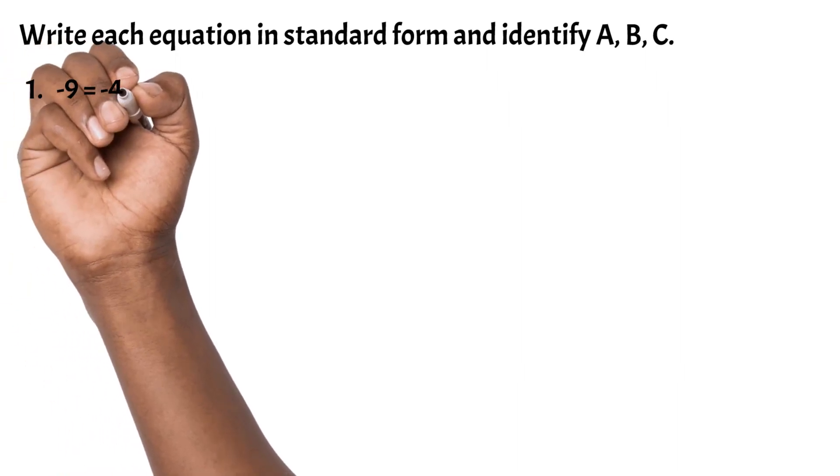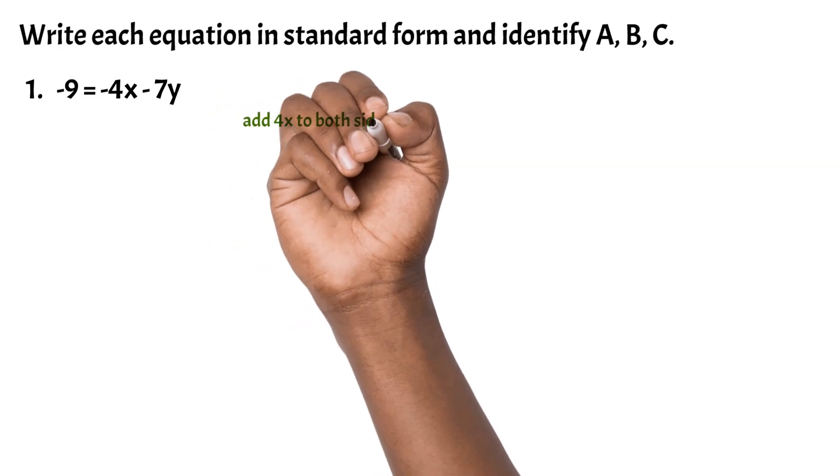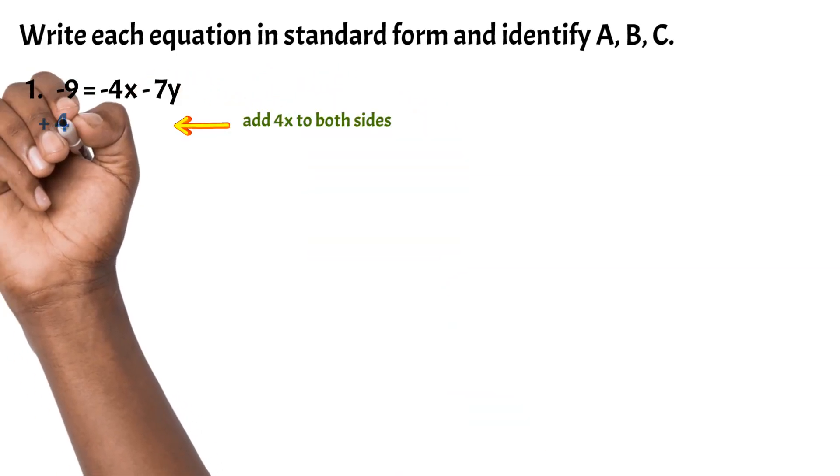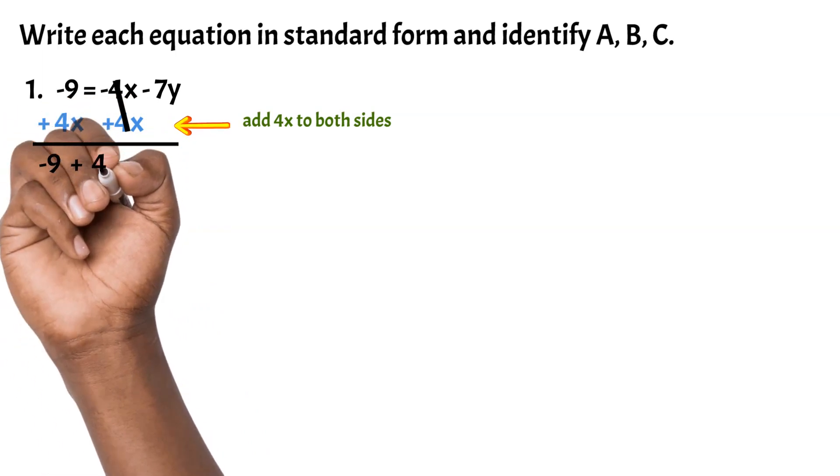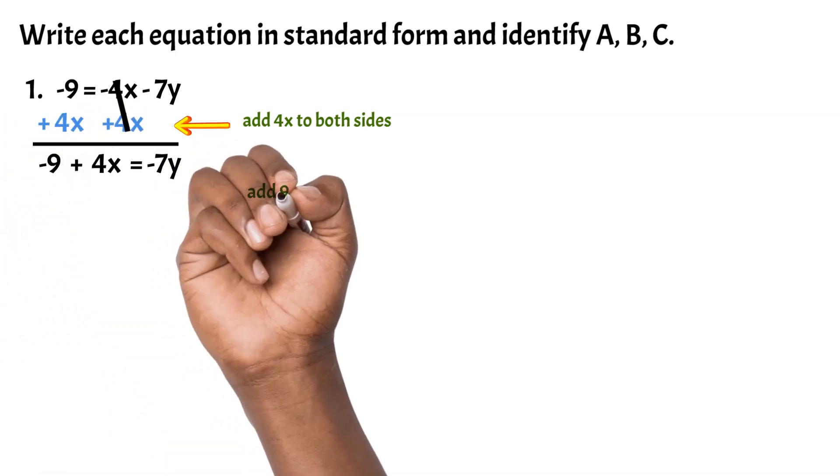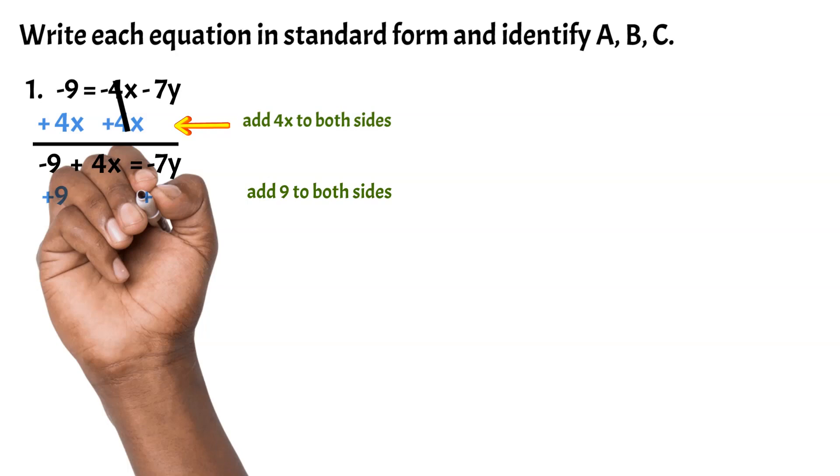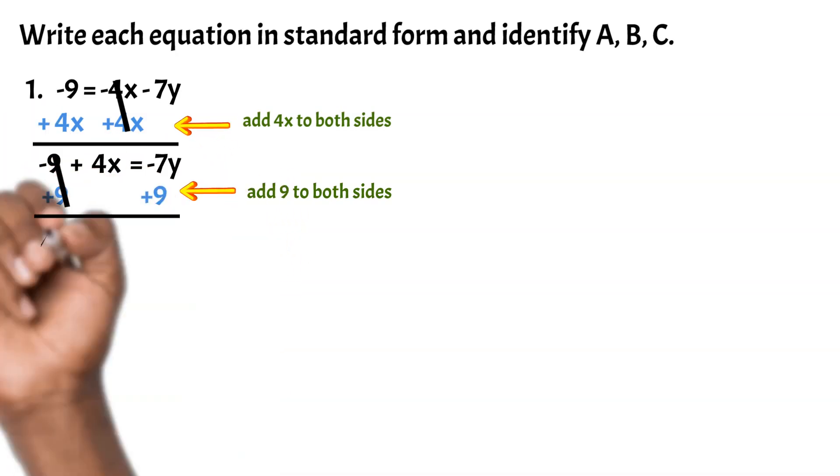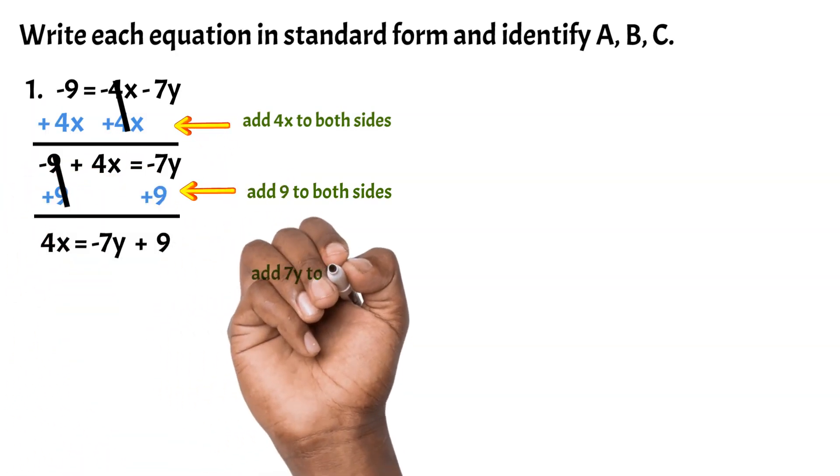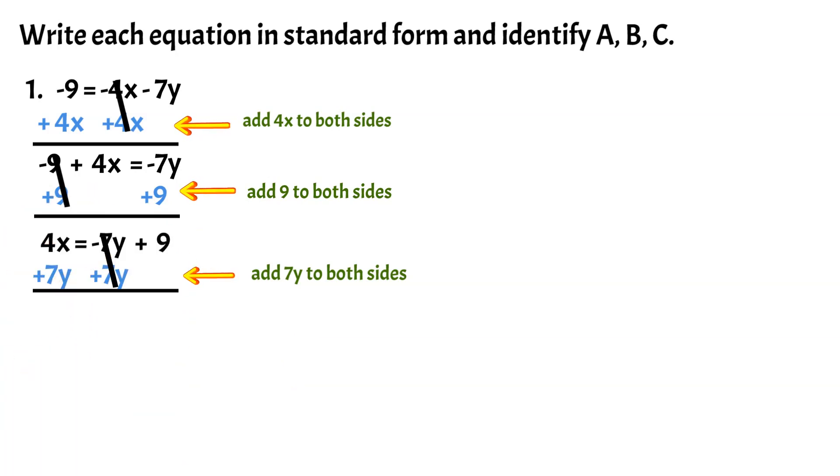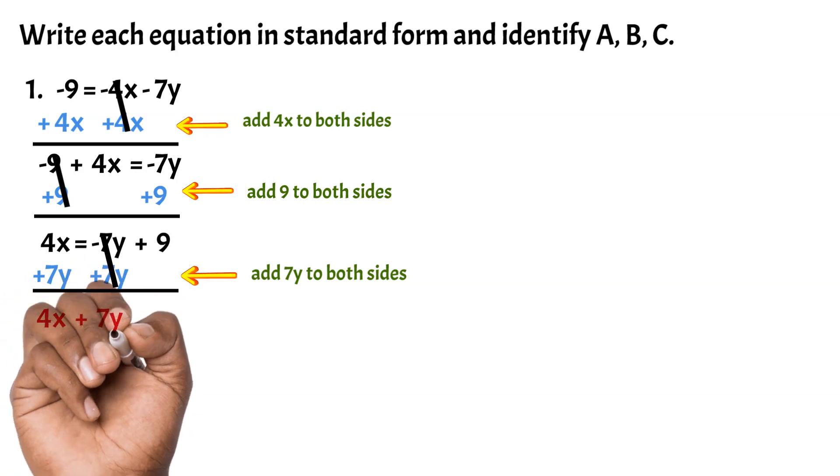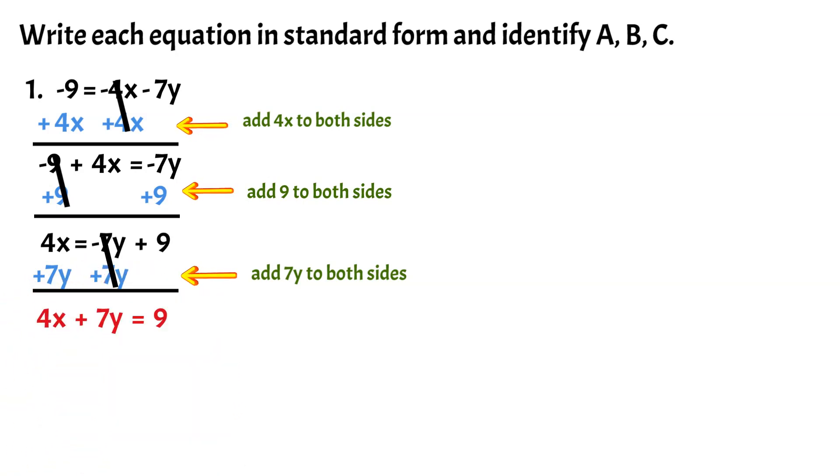Example 1: -9 = -4x - 7y. Now we add 4x to both sides, we get -9 + 4x = -7y. Now add 9 to both sides and we get 4x = -7y + 9. Now we add 7y, then we get 4x + 7y = 9.